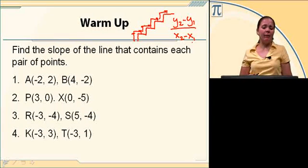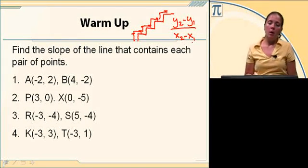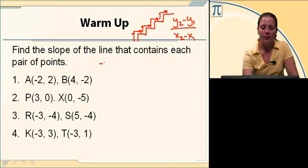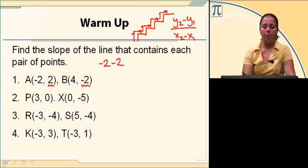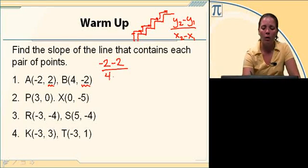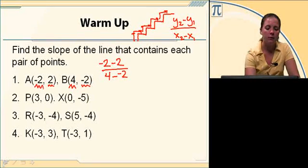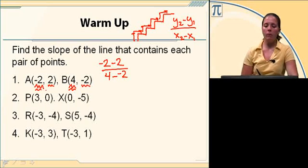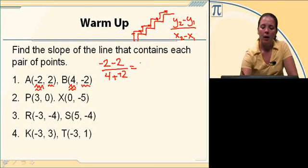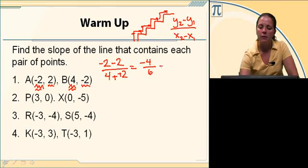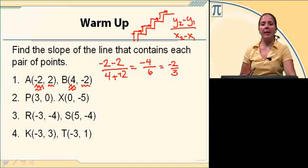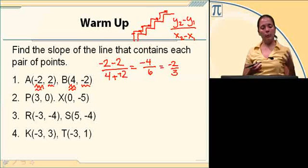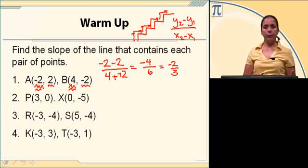Number one, we have the point negative 2, 2 and the point 4, negative 2. To find the slope, we're going to find the difference of the Y's: negative 2 minus 2, over 4 minus negative 2 — X and my X. When I combine these, I get negative 4 over 6, or negative 2 thirds. This means the line that contains those two points has a slope of down 2, right 3.